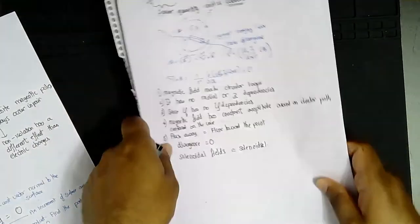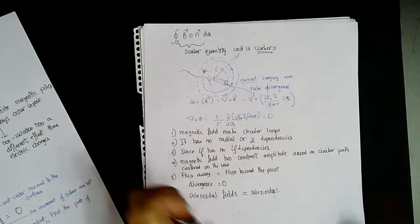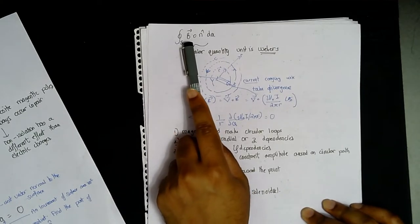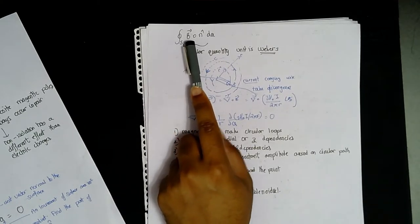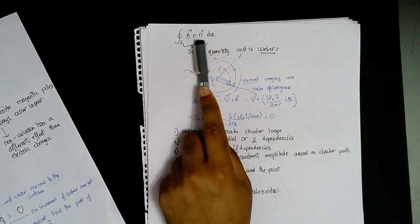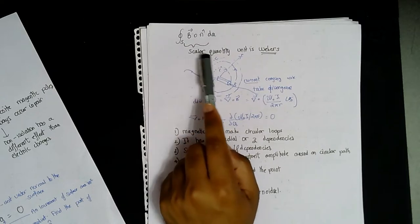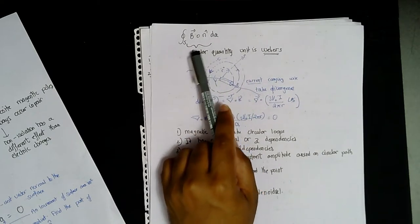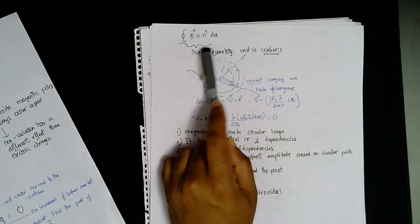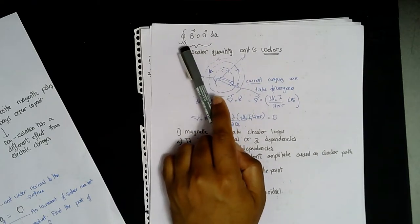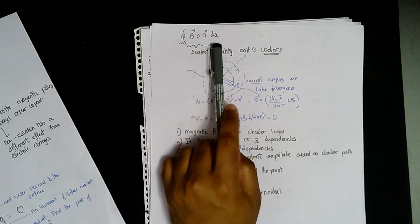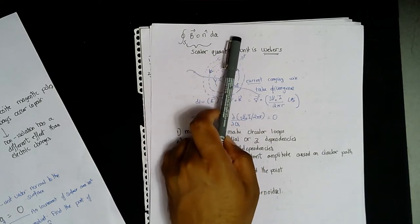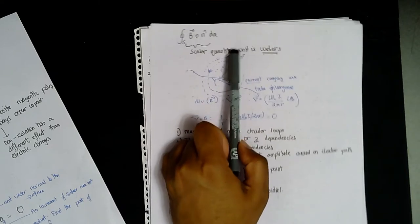A few things to note about this equation: the magnetic flux dotted with the normal vector is a scalar quantity, and the unit of magnetic flux is the Weber.